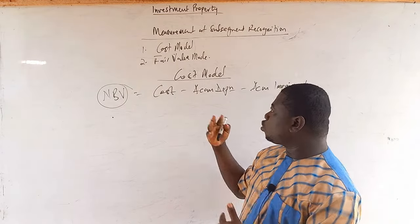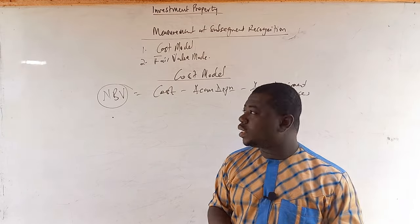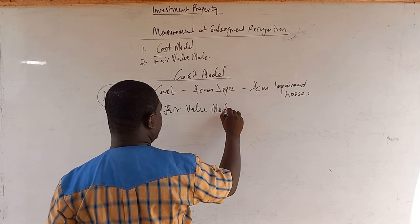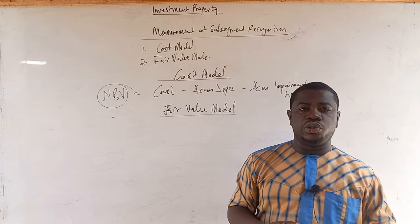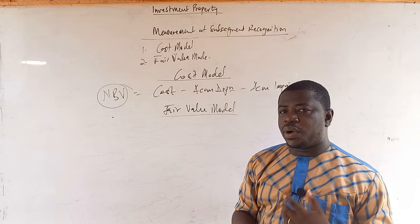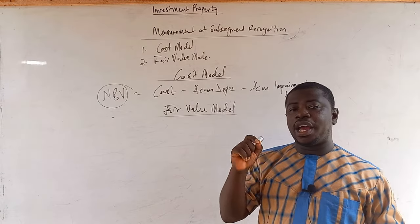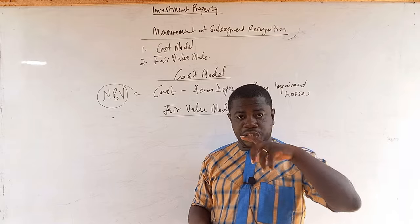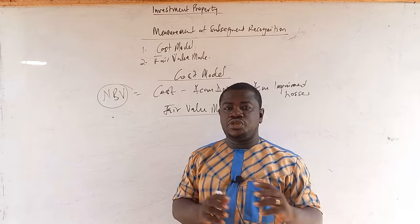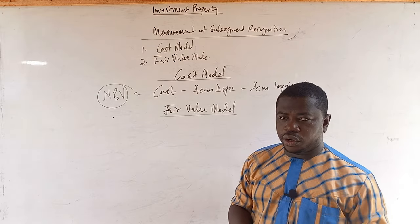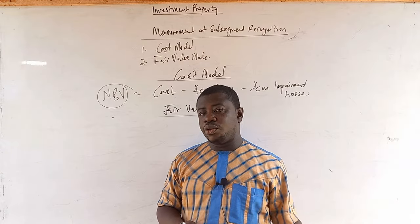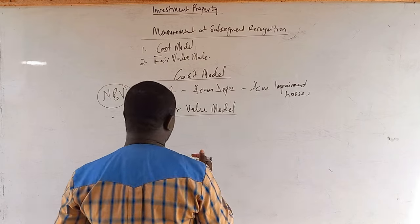So that is just how to go about it. With the fair value model, what we do is revaluation — so at the end of every year there could be a revaluation. It could be an upward or a downward revaluation. If it is an upward revaluation of the investment property, you are going to get a gain on revaluation and you treat that gain through the profit or loss statement as other comprehensive income. If it is a loss on revaluation, you also treat it the same way through the income statement.